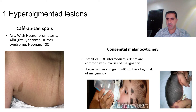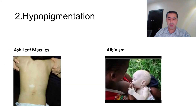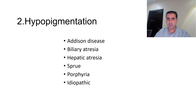Now we'll talk about hypopigmented lesions, which includes ash leaf macules and albinism. Other hypopigmented lesions are associated with Addison's disease, biliary atresia, hepatic atresia, porphyria, and idiopathic causes.